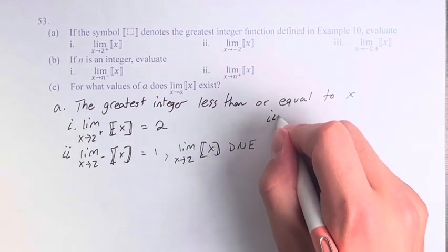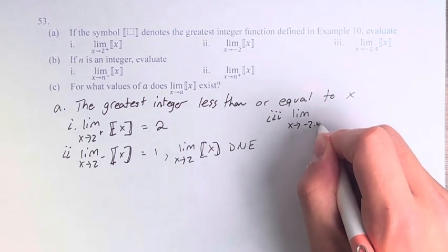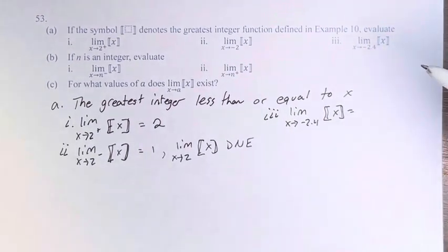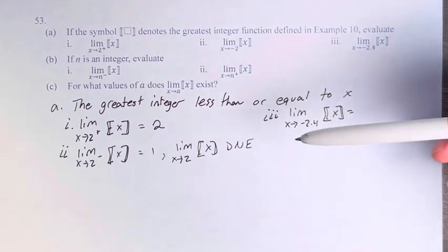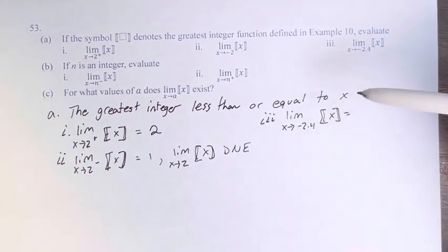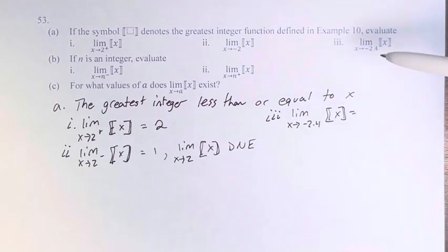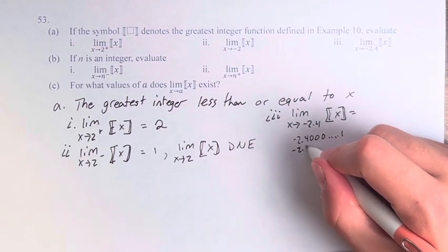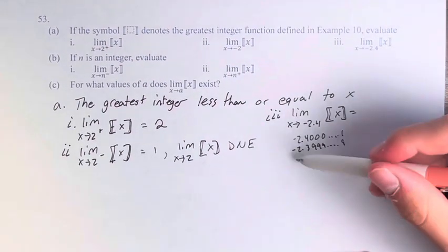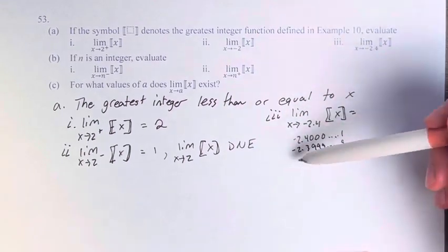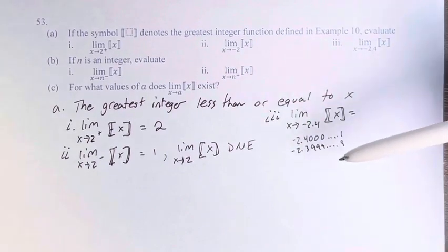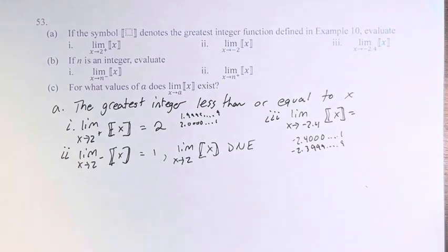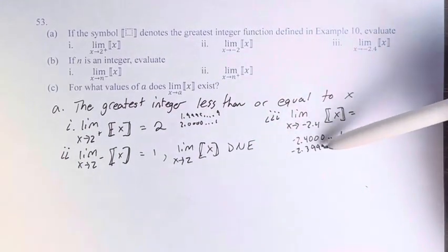In part 3, the limit as x approaches negative 2.4 of x. This is a little different. Whether we're dealing with from the left — that would be negative 2.40001 — or from the right — negative 2.39999 and so on — these are very close to each other. The greatest integer less than or equal to both of these is the same, because they're not bordering an integer the way 1.99999 and 2.0000 are. For both of these, the greatest integer less than or equal to them is negative 3.